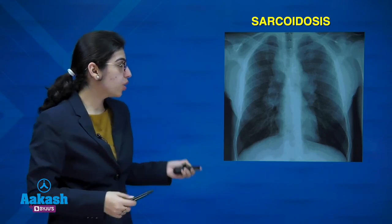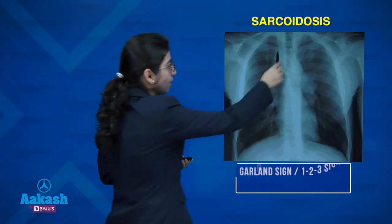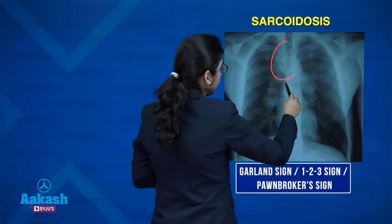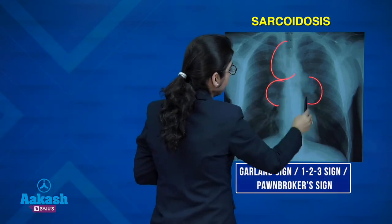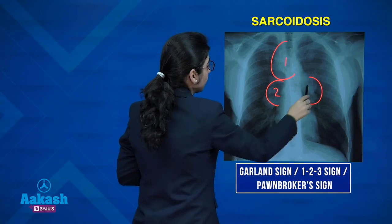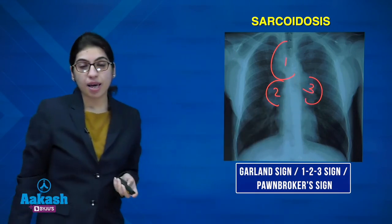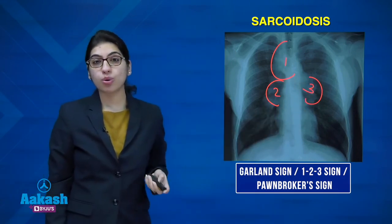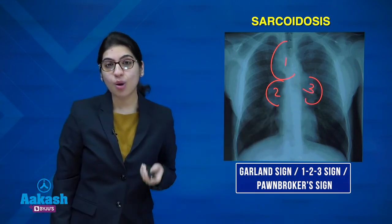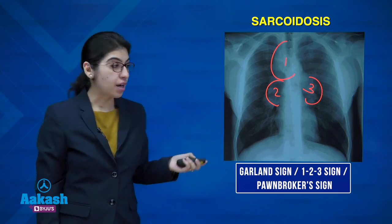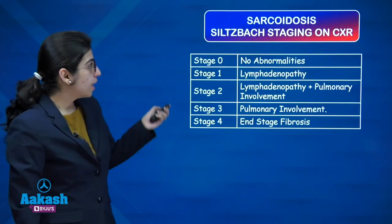An X-ray showing dilated right paratracheal and bilateral hilar lymph nodes — the 1-2-3 sign, garland sign, pawnbroker sign — represents sarcoidosis. Scadding's staging is used for sarcoidosis on chest X-ray.